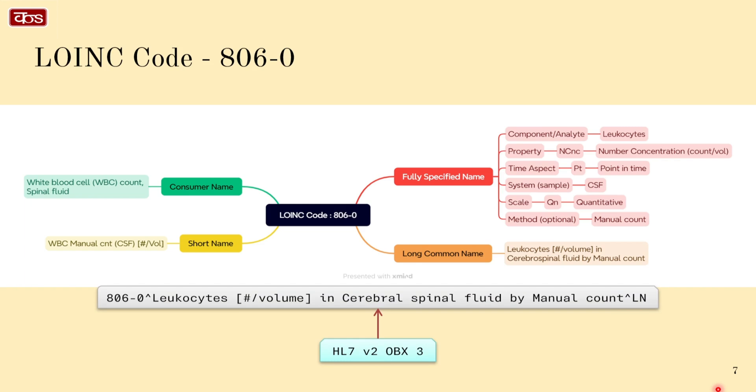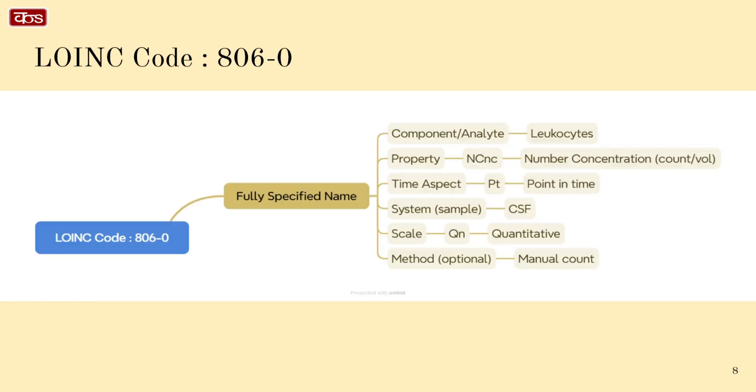Let us look at the FSN in some detail. This is the FSN in detail: component or analyte is leukocytes; property is NCnc, short for number concentration; time aspect is Pt, short for point in time; system sample is CSF; scale is Qn, short for quantitative; method is manual count.